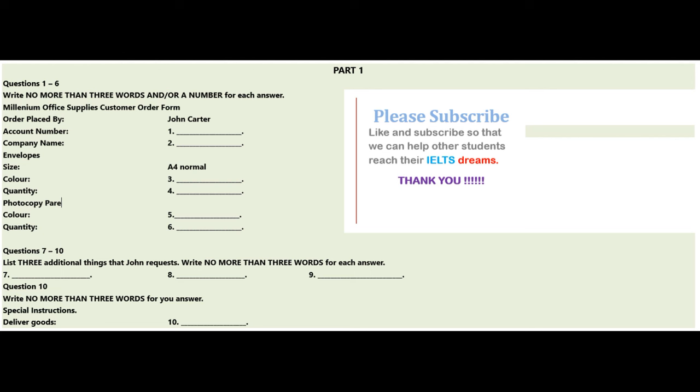Gina speaking. How can I help you? Oh, hello. I'd like to order some stationery, please. And who am I speaking to? John Carter. Right. Can I just confirm your account number and the name of your company, John? Sure. The account number is 692411. 692411. Right. And you're from Rainbow Computers? No. The company is Rainbow Communications. Oh, okay. I'll just fix that on the system. Communications.